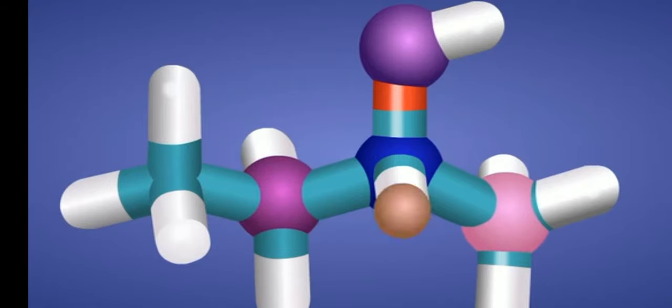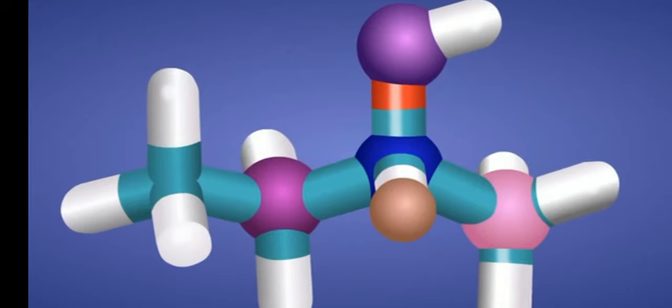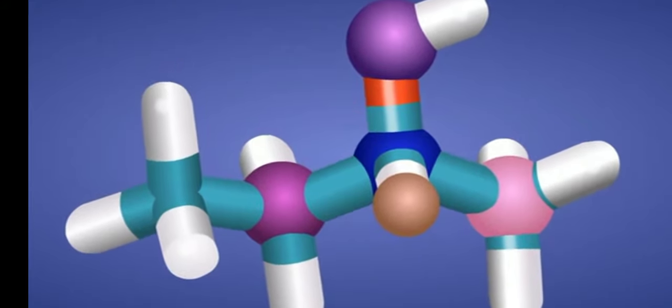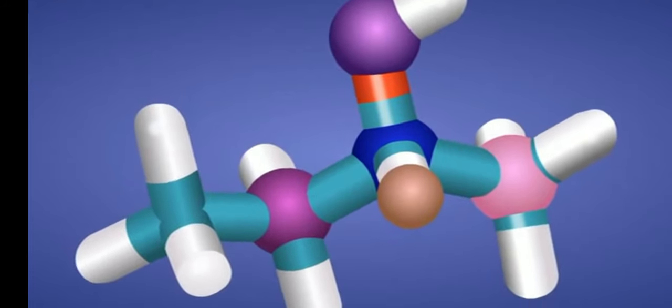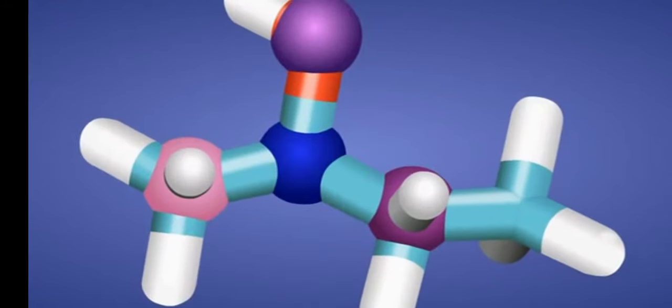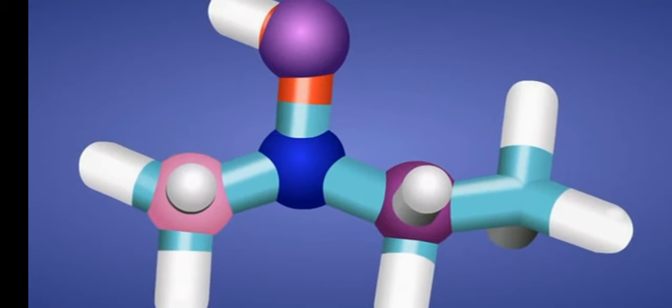The molecule propane 2ol on rotation shows its mirror image and on further rotation by 180 degrees gives a structure same as that of the molecule of propane 2ol. Hence, by this superimposability test, we can say that propane 2ol is an achiral molecule.